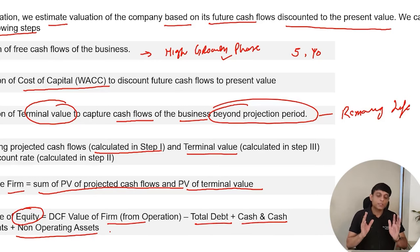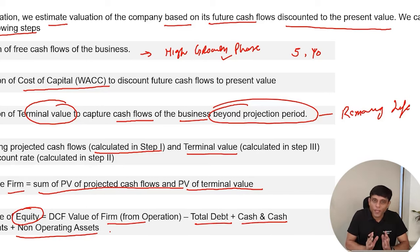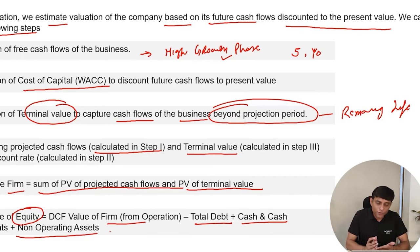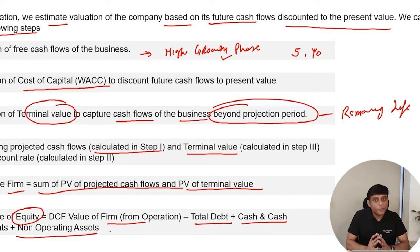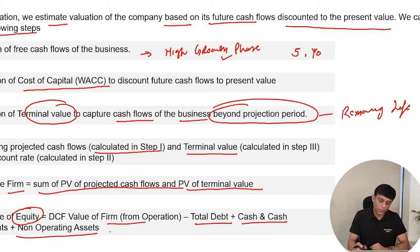This is the six-step process to find the DCF value of any company or business. Now let's discuss Steps 1, 2, and 3 in detail — how we calculate free cash flows, how we calculate cost of capital, and how we calculate terminal value. Then we will move to a live example and do the valuation of a real company using the DCF approach.